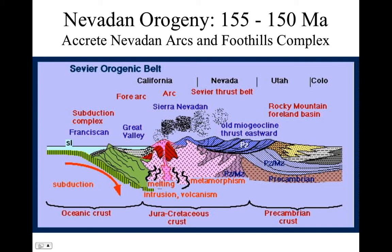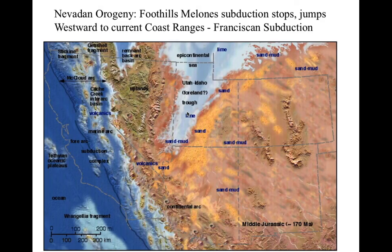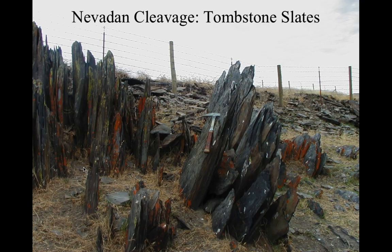We create the Coast Range Ophiolite and the Smartville terrain over here. And we start forming the Sierra Nevada Batholith and the Magmatic Arc. So that is our Mesozoic California. And here's another look at it where we see now there's subduction here in the Coast Ranges — we start seeing the Franciscan subduction — and the foothills subduction has been clogged up and all that's been moved toward the west. And then these are the famous tombstone slates — those tombstone slates formed during the Nevadan orogeny. Nevadan cleavage, Nevadan orogeny — so anything older than about 150 million years old has this pervasive foliation in the Sierra Nevada foothills.